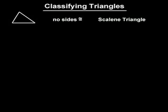One way of classifying triangles is by their number of congruent sides. A triangle that has no sides congruent, for example, is called a scalene triangle.